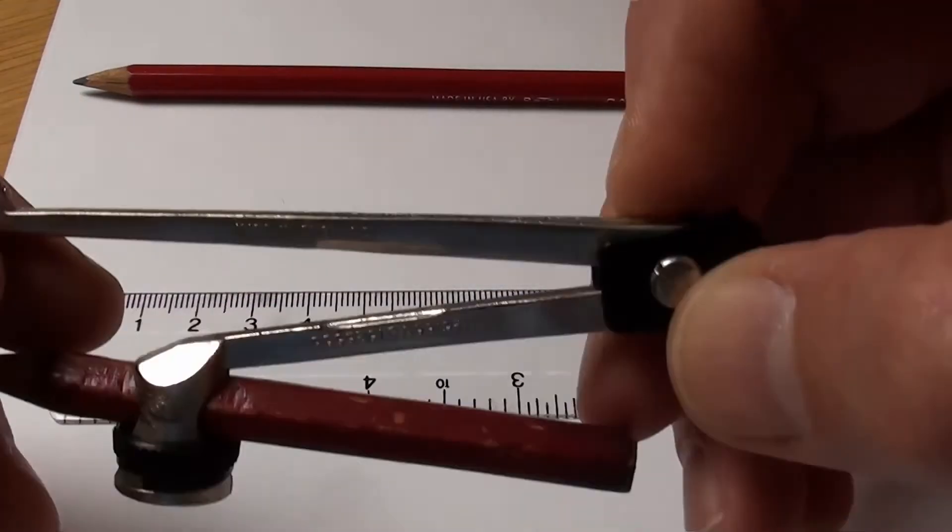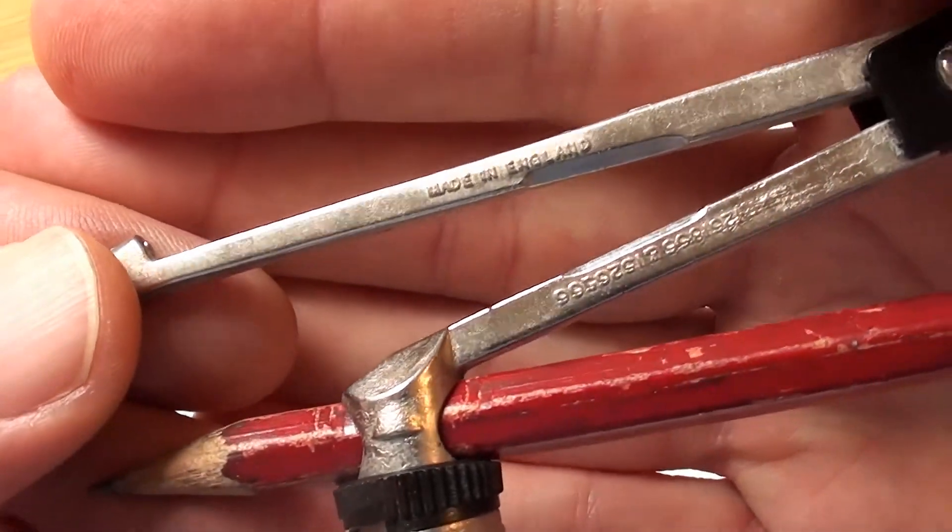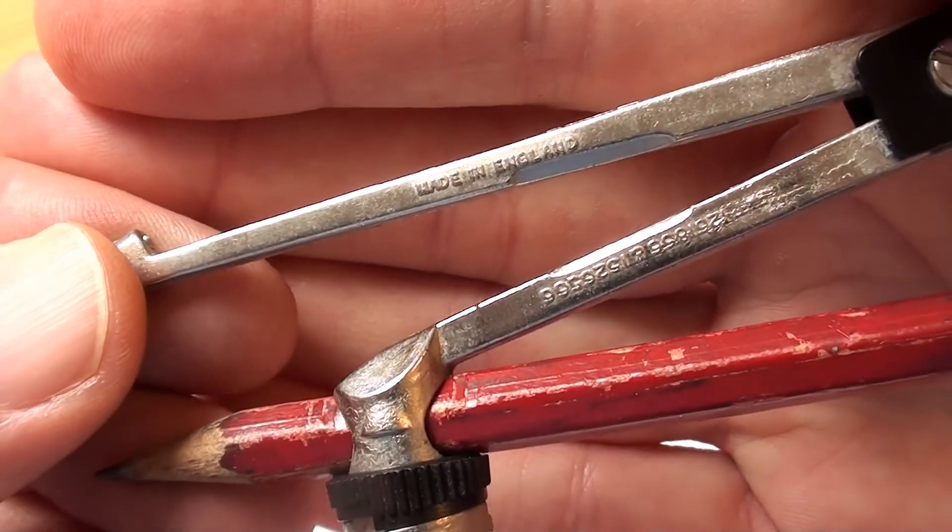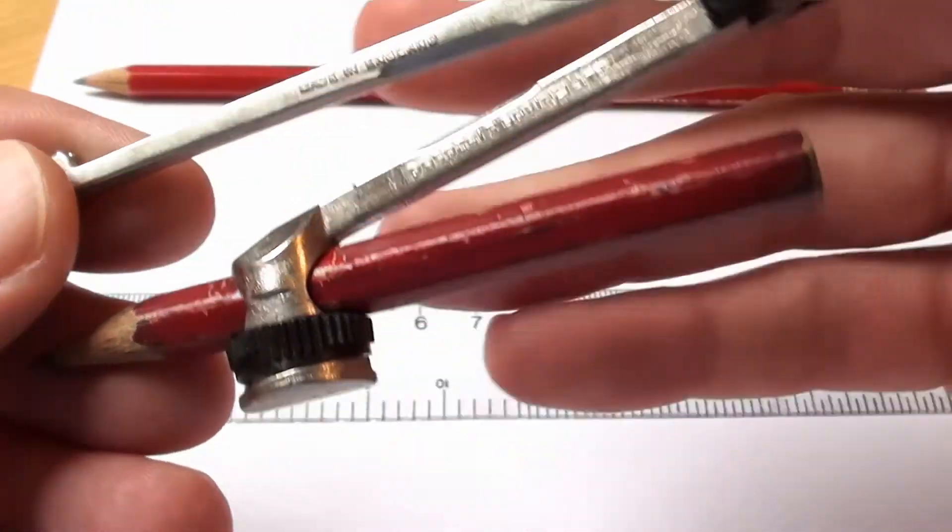This is very much old school. This really is my old school compass. You can see here it says Made in England. That's how old it is. I don't suppose they're made in England anymore.